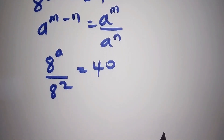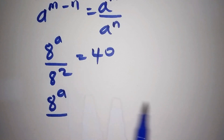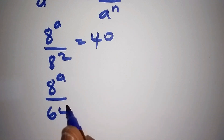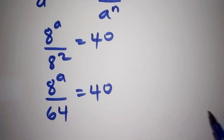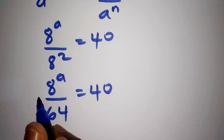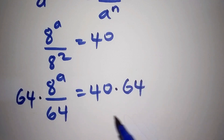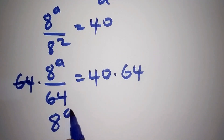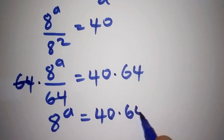From there we shall now work it out. So 8 to the power of A shall remain over 8 to the power of 2, which is 64, equals 40. From here we shall multiply both sides by 64. So 64 and 64 cancel, and we remain with 8 to the power of A equals 40 multiplied by 64.